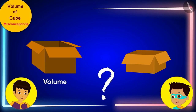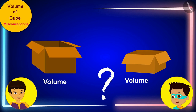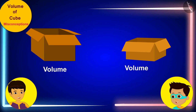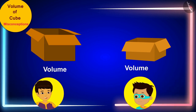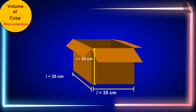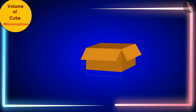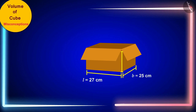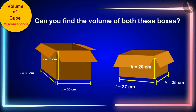Manas says: you find the volume of this cubic box and I will find the volume of the cuboid box. Both started solving for the volumes of their respective boxes. Friends, if the length of the sides of the cubic box is 35 centimeters, and the length, width, and height of the cuboid box are 27 centimeters, 25 centimeters, and 20 centimeters respectively, can you find the volume of both these boxes? Pause the video to try it yourself and then match your answer.